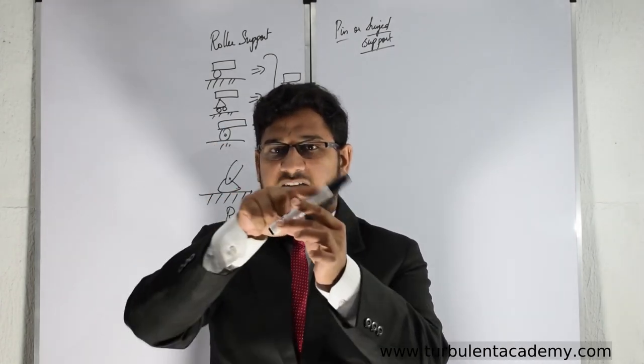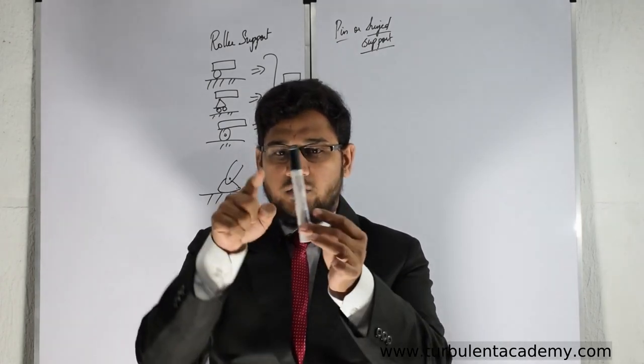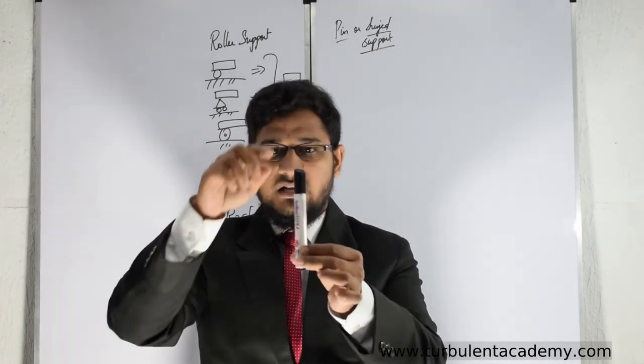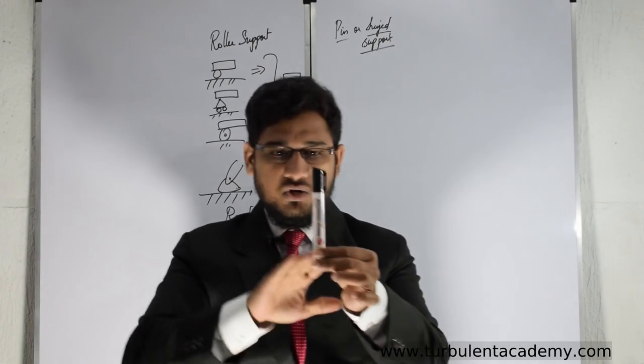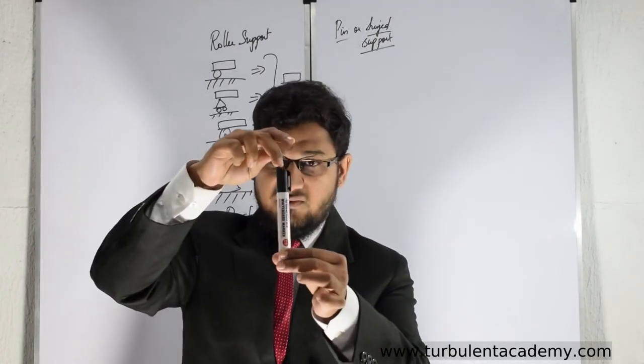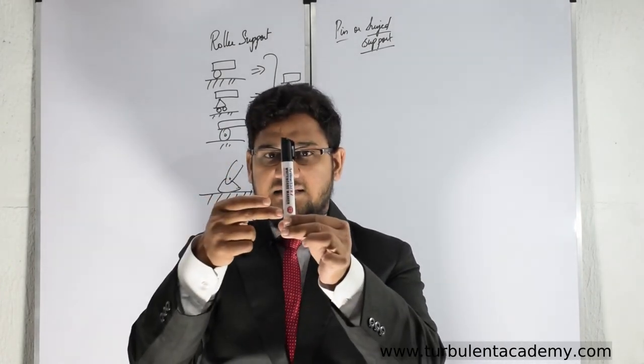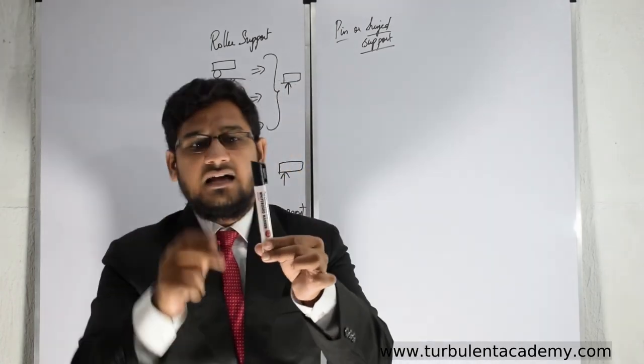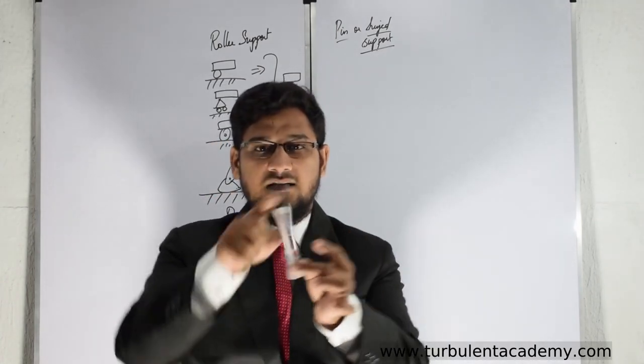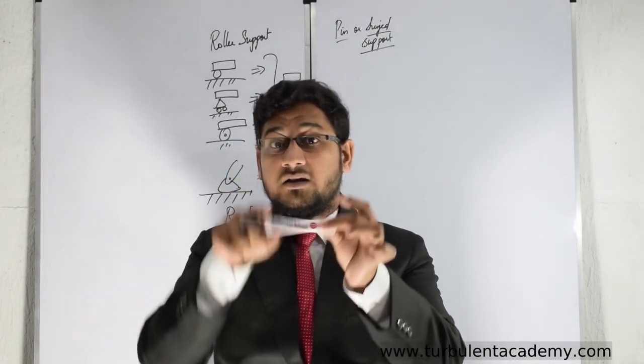So if a joint or support which resists the force in the vertical direction as well as in the x direction, but it allows in the circular direction, rotation—it might be clockwise or it might be anticlockwise—that kind of support we call it pin or hinged support.